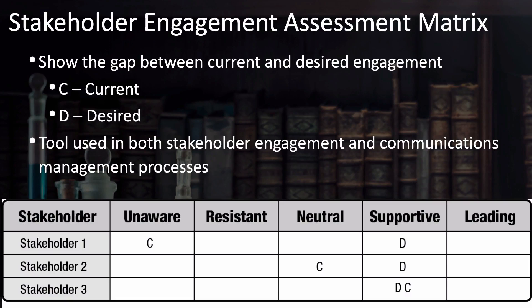The stakeholder engagement assessment matrix is a simple but useful and practical tool for analyzing stakeholders. It's used to show whether stakeholders are unaware of the project, resistant to it, neutral to it, supportive of it, or leading it. It shows the gap between their current level of engagement and the desired level of engagement. This tool is used in both stakeholder engagement and communications management processes.